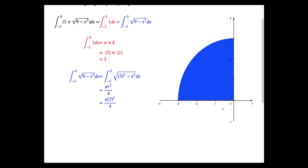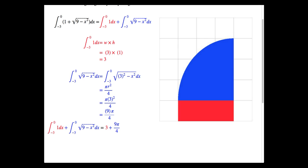So we just plug in the radius of 3, and we have 3 squared, which is 9 pi over 4. Again, with a property of linearity, we can just simply add the two parts together, in which case we have an area of 3 plus 9 pi over 4.